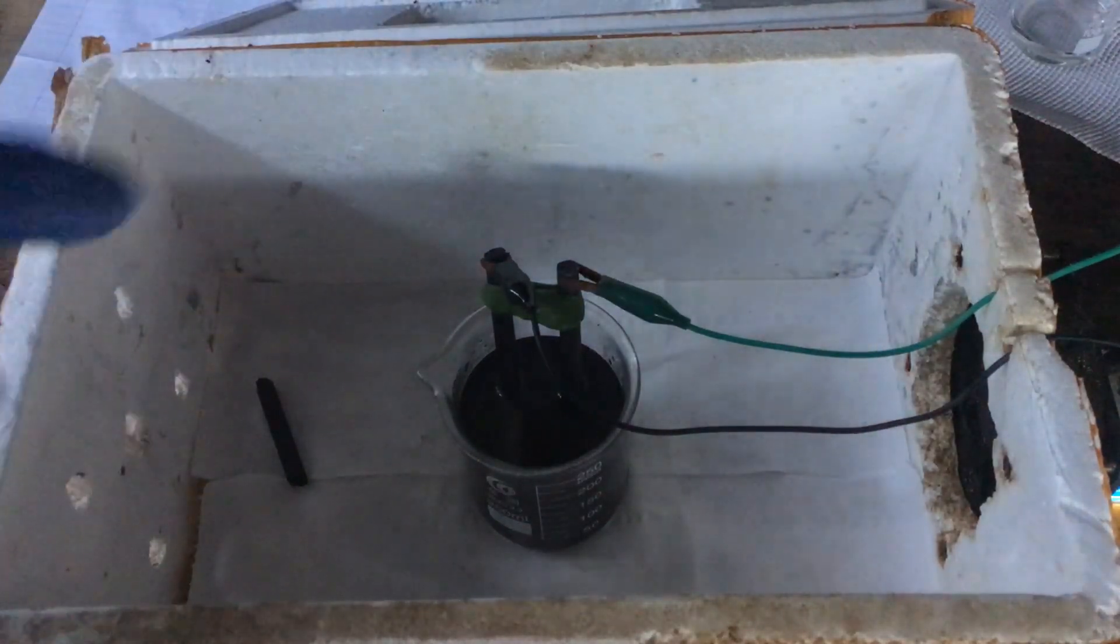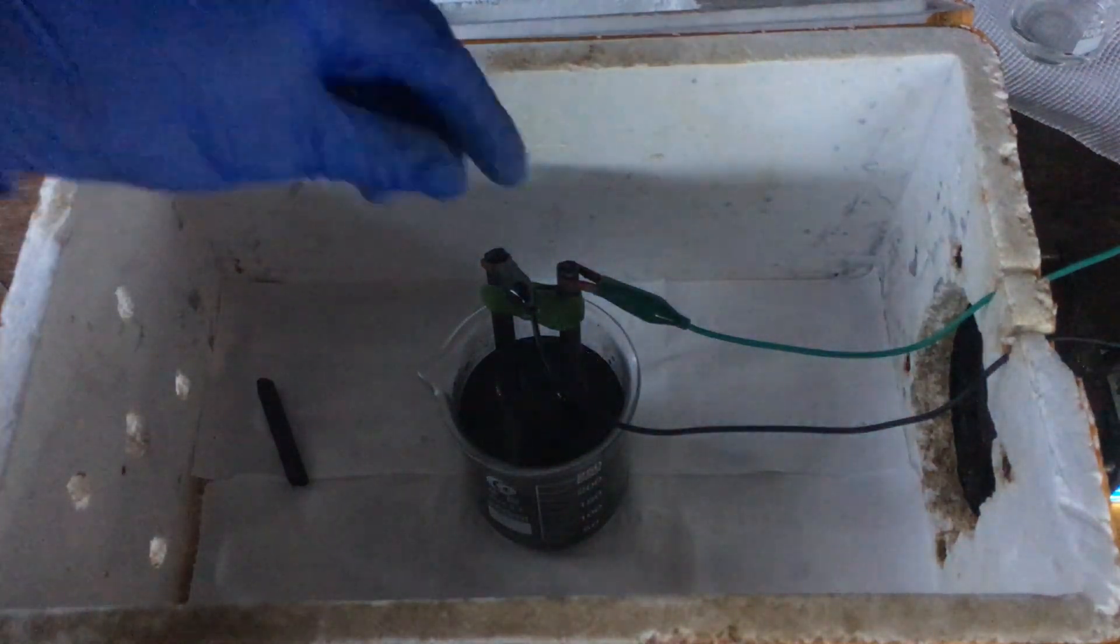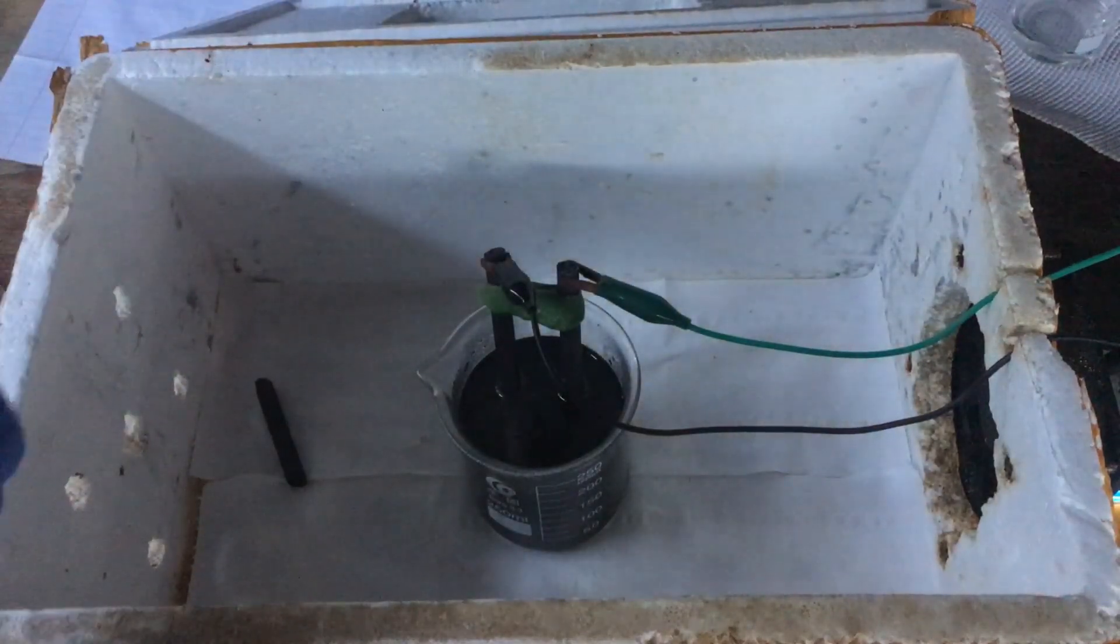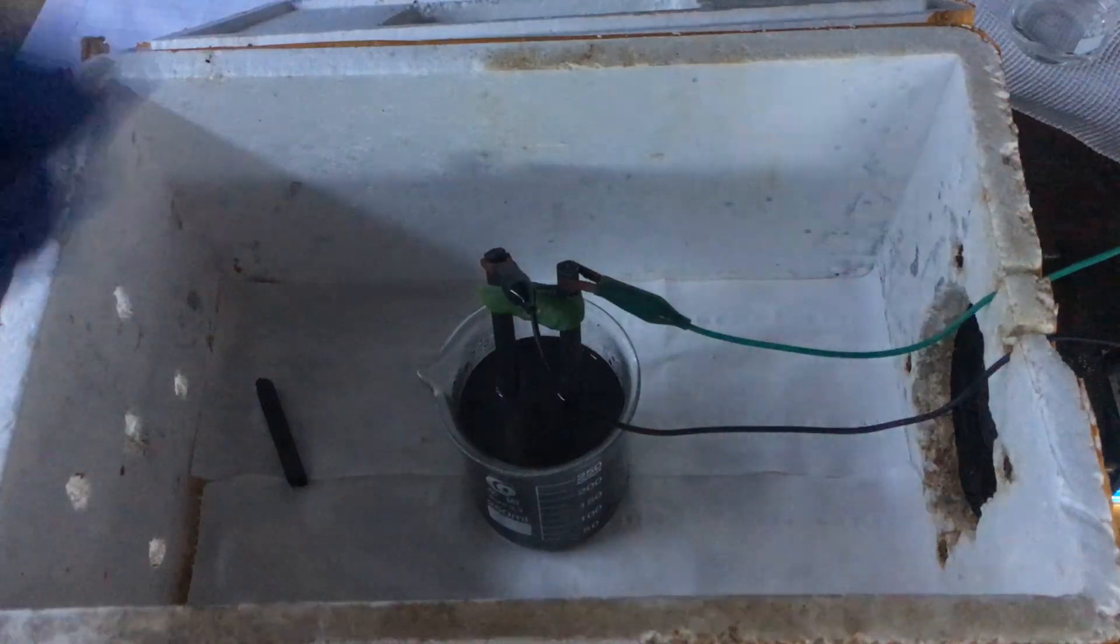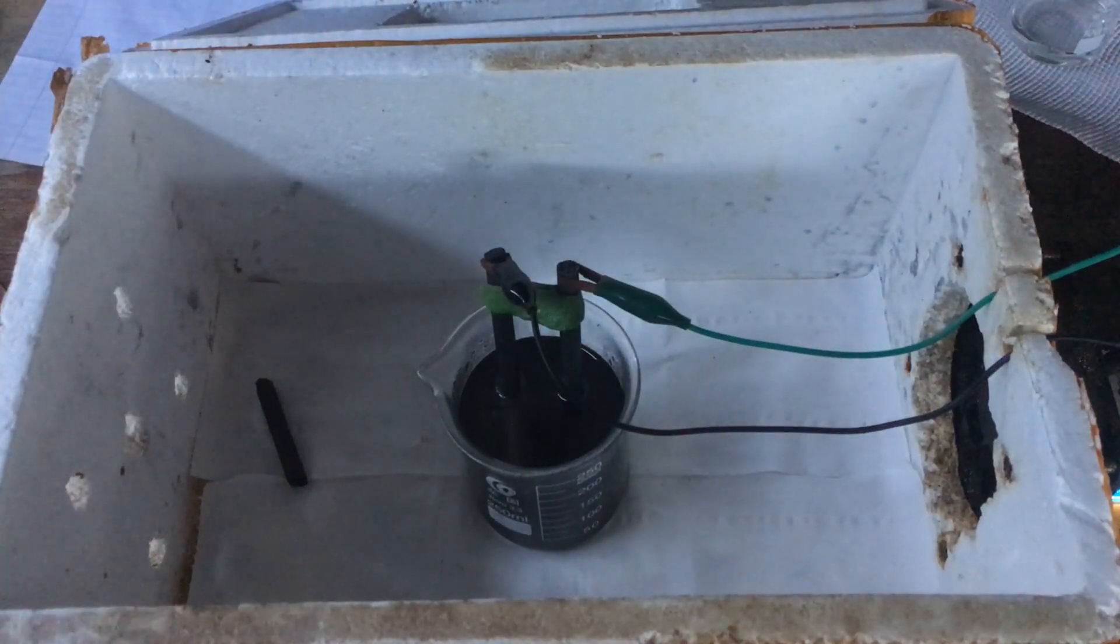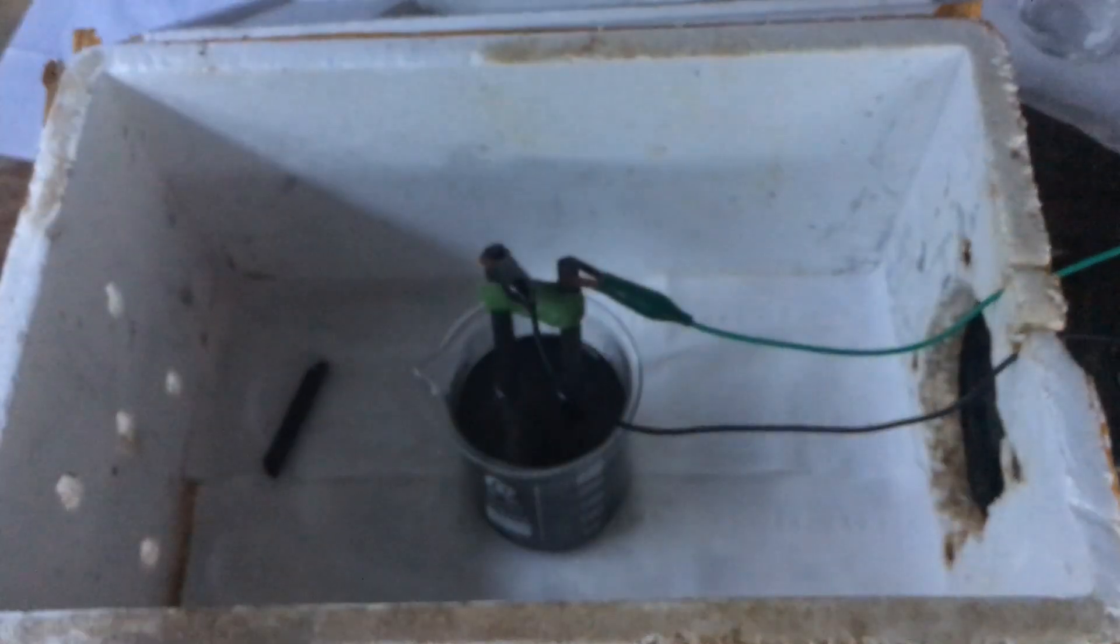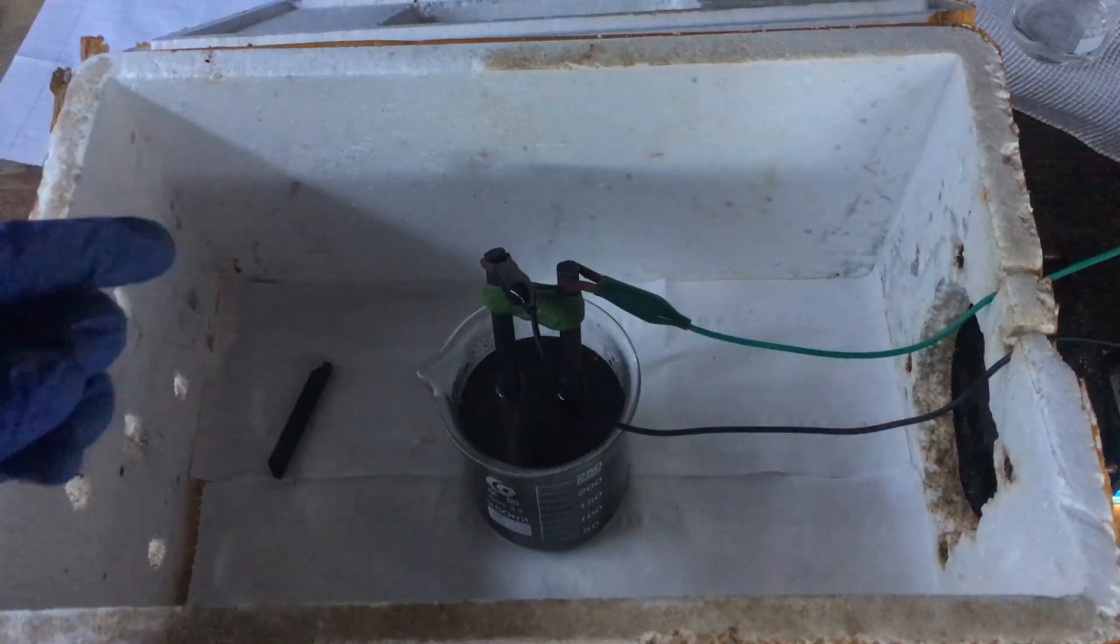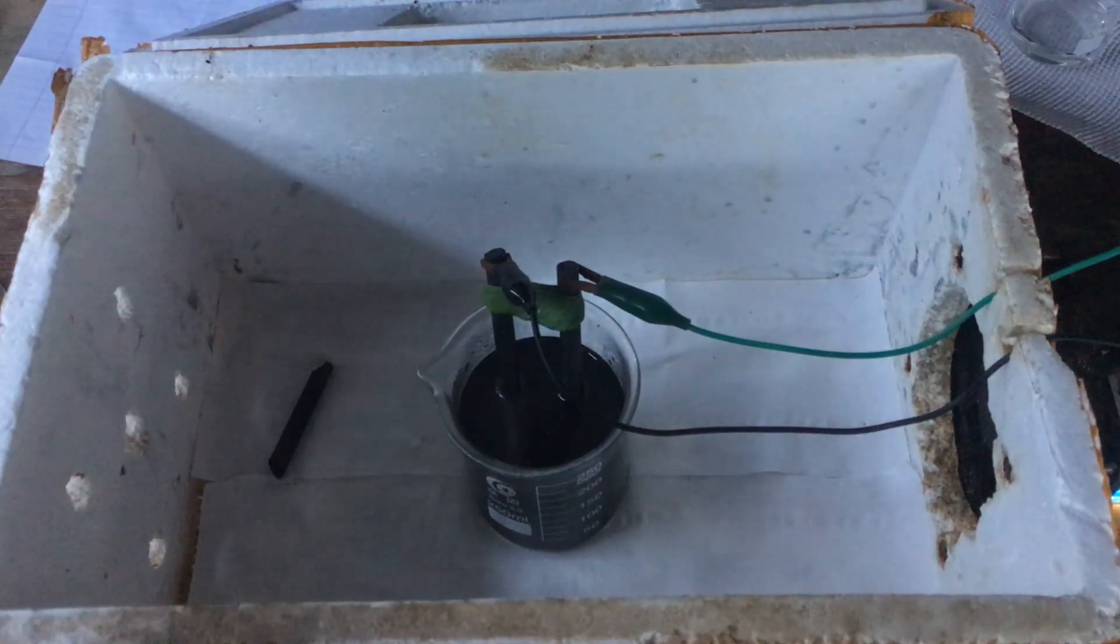Okie dokie, the cell has been running for around about 27 hours now at 150 milliamps. The anode, or the original anode, I had to replace because the graphite fell apart, which makes sense. We are electrolyzing a solution of sulfuric acid and graphite falls apart under those conditions. You can see this is the original anode here. It just disintegrated completely. So what I'm going to do now is, I think that's enough time, 27 hours to run the cell. I'm going to filter all of our resulting solution and then we will get to measuring the lead content.